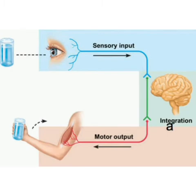Motor nerves extend from brain to muscles. On seeing a glass of water, the brain instructs our hand muscles to pick up the glass and drink water. The nerves which do this function are called motor nerves.